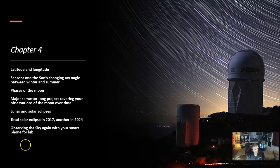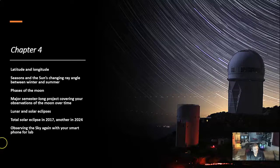In Chapter 4, we look at Latitude and Longitude, seasons and the sun's changing ray angle between winter and summer, and the phases of the moon.